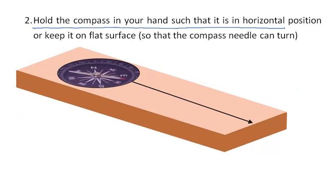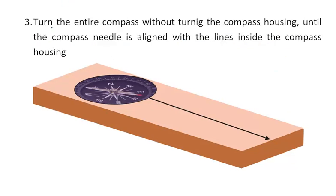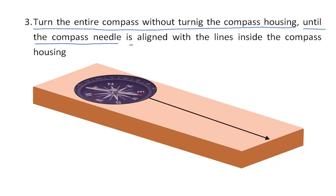The second step is to hold the compass in your hand in a horizontal position, or keep it on a flat surface so that the compass needle can turn freely. The third step is to turn the entire compass without turning the compass housing, until the compass needle aligns with the lines inside the compass housing. There are certain horizontal lines inside the case, and when the needle aligns itself with those lines, this direction gives you the correct north-west direction.